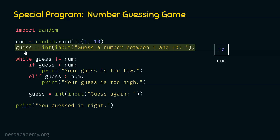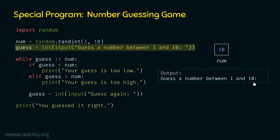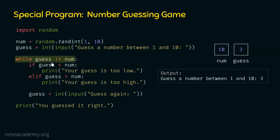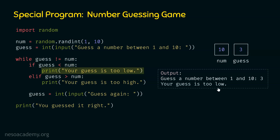Next we execute: guess = int(input('Guess a number between 1 and 10: ')). In the output window we observe the prompt, and let us assume the user provides 3. So guess is now 3. We can see that guess is not equal to num, so this condition is satisfied and we enter the while loop. We check whether guess is less than num — yes, 3 is less than 10 — so we print 'Your guess is too low.'